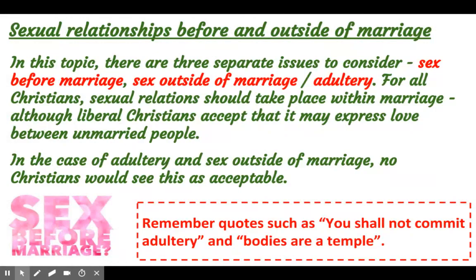The next topic to look at is sexual relationships before and outside of marriage. There are some key phrases that you've got to learn: sex before marriage, sex outside of marriage, and adultery. For all Christians, sexual relationships should take place within marriage. However, that's slowly begun to change, and there are liberal Christians who would accept that people might not want to get married but might be committed to one another and therefore have a sexual relationship as an expression of their love.